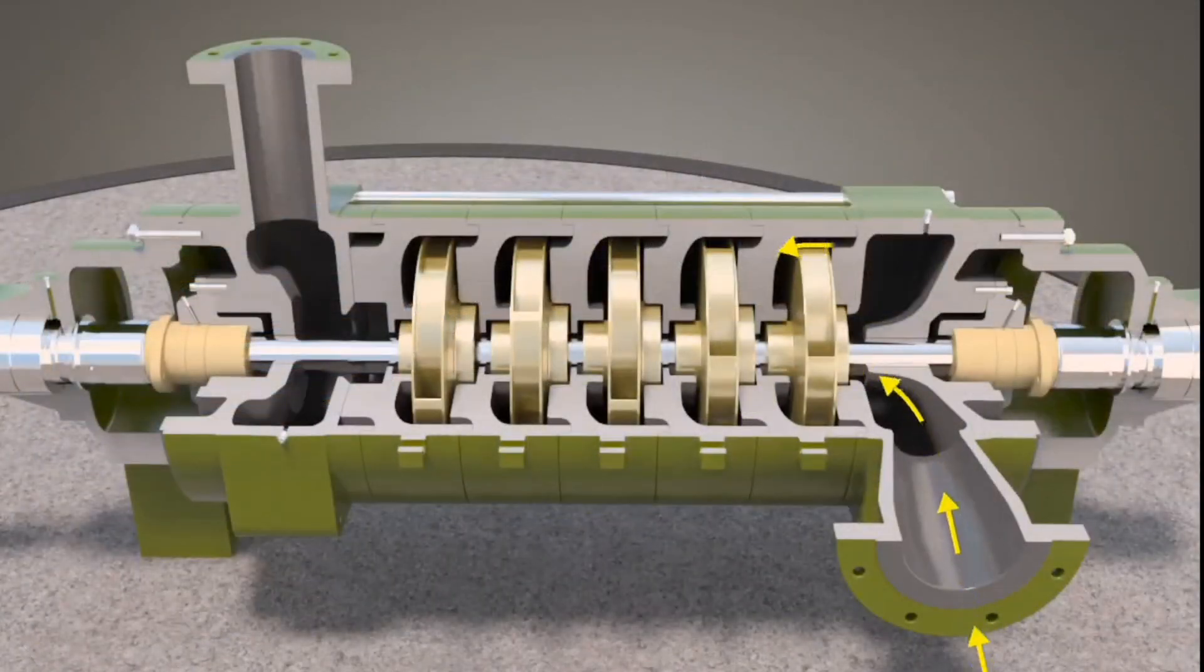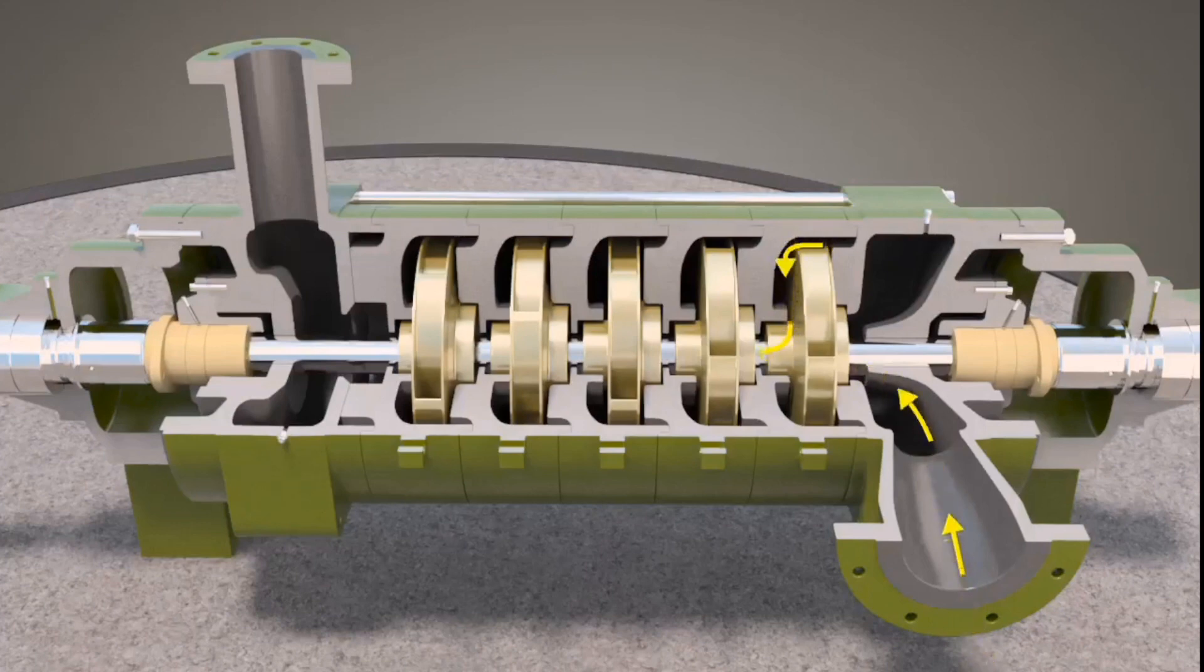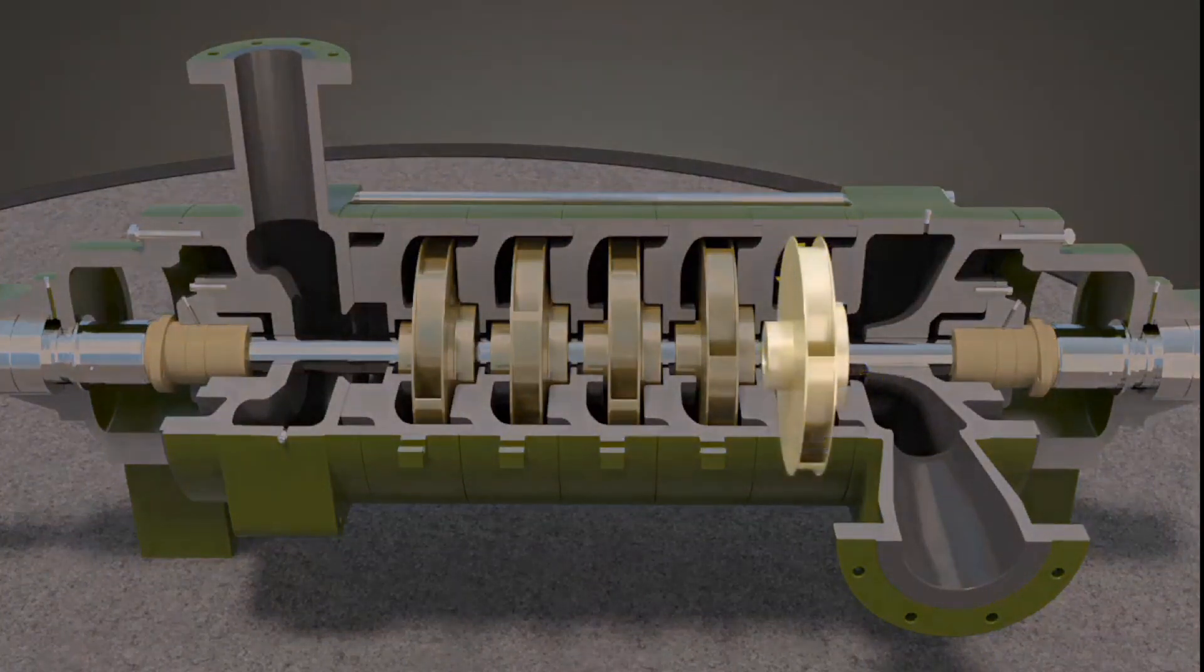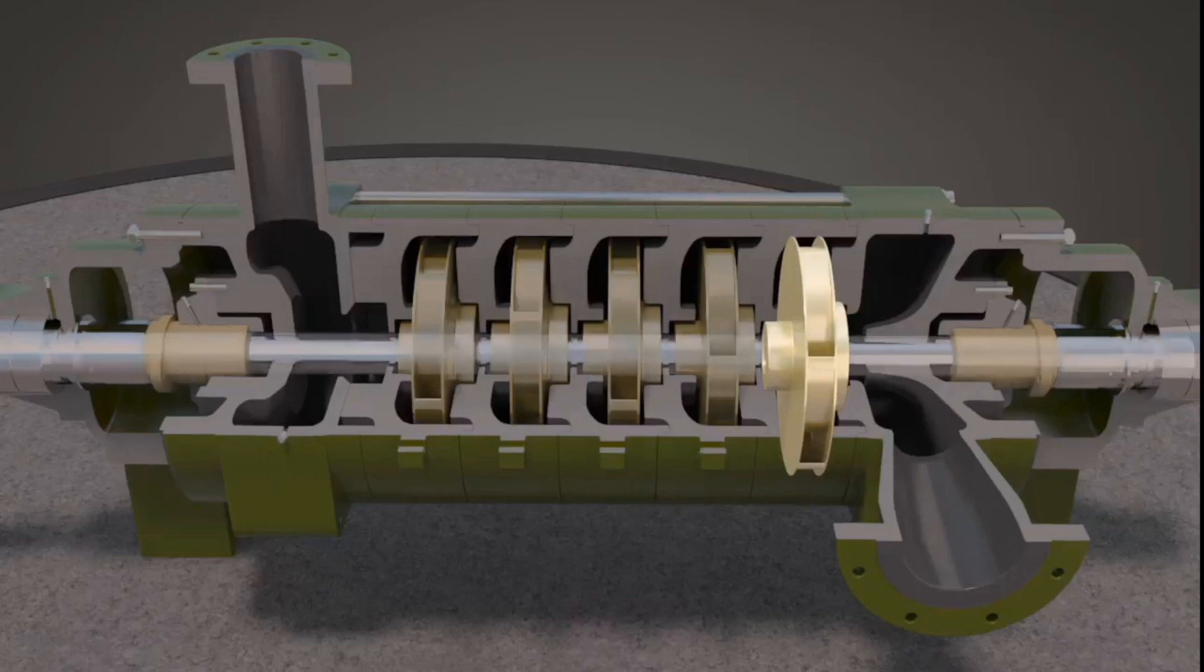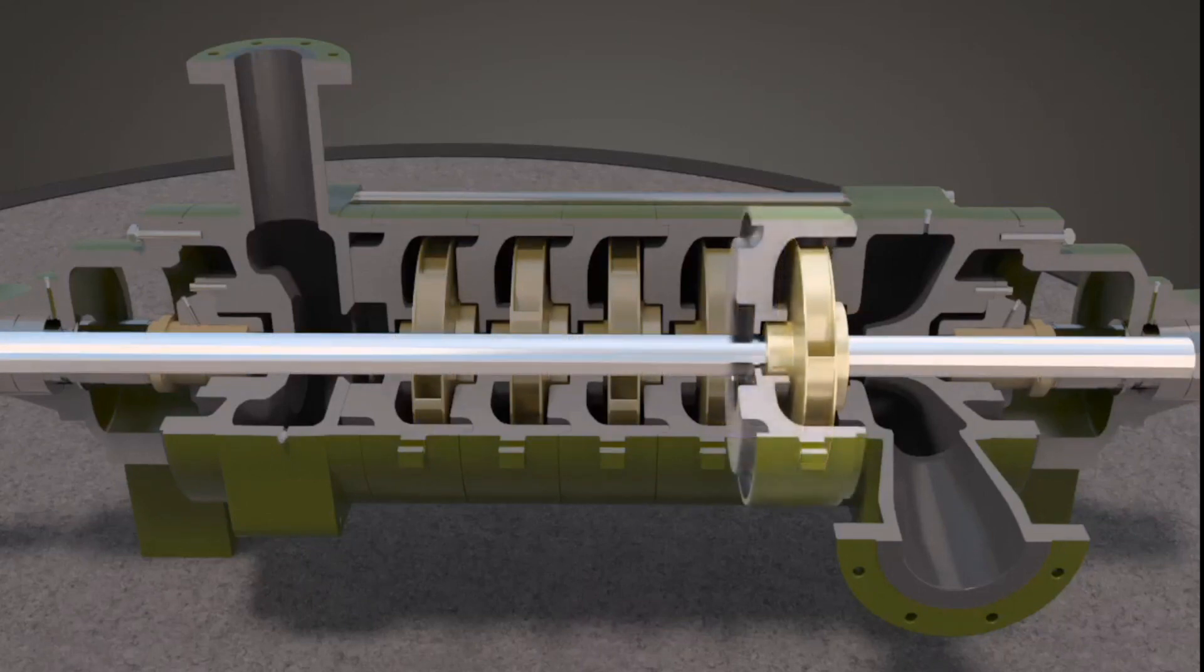The suction port directs fluid to the first impeller. One impeller for each stage is attached to the shaft. Each impeller fits into a volute chamber in the casing.